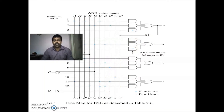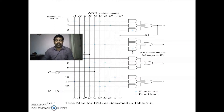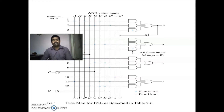Similar problems can be asked in the exam. The first step is K-map simplification to get the expression. You must check that each expression has only three product terms. If it has more than three, check if any terms are similar to another expression. If similar, write it as the sum of that expression plus the remaining terms, so you get three or fewer product terms and can implement using PAL.